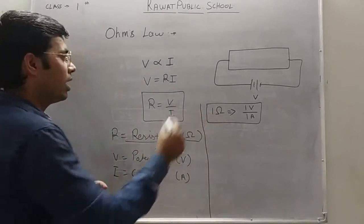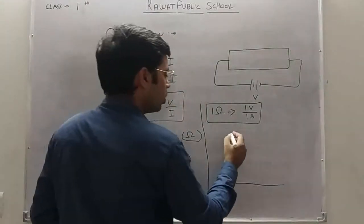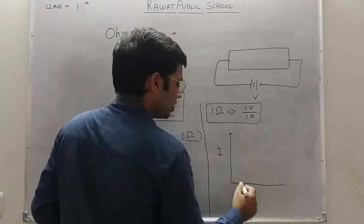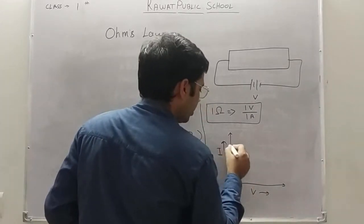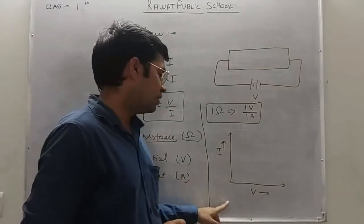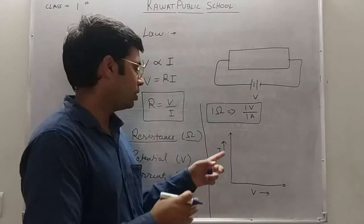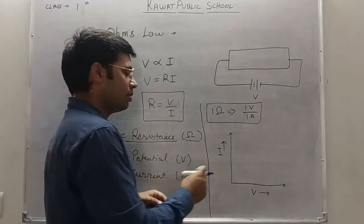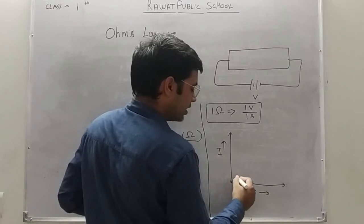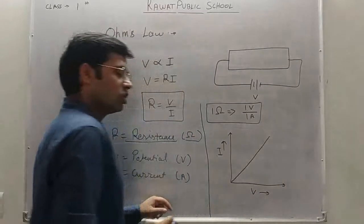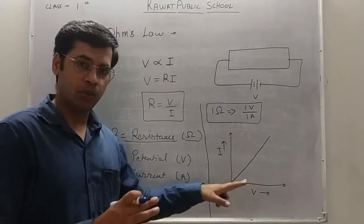Now if we draw a graph between potential and current, on the y-axis we take current and on the x-axis we take voltage. This is because on the x-axis we generally take the variable we change (independent variable), and on the y-axis we take the dependent variable. So current I is dependent — when we increase the potential, current starts increasing and there is a linear relationship between them. This is the graph of Ohm's Law.